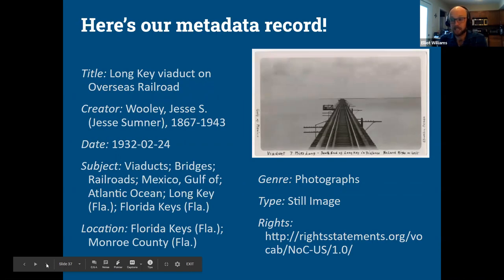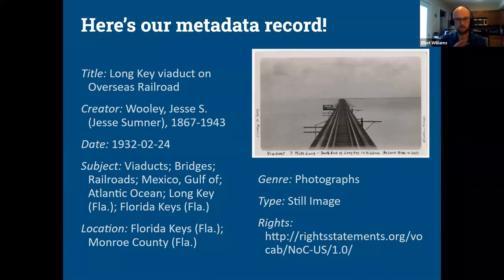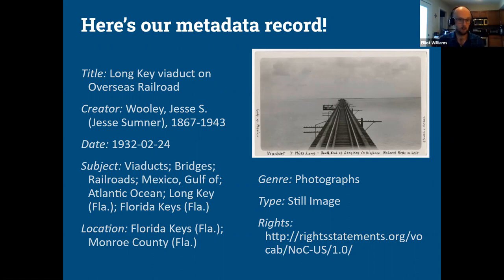Here's a completed metadata record for that item — including most of the fields we talked about. I left the description off to save space on the slide, but I also added genre, type, and rights fields. There's no one correct way to create a metadata record — if all 50 of us on this call created a record today, we'd probably get 50 different but equally valid records. But this is one example of what a complete record for this item could look like.